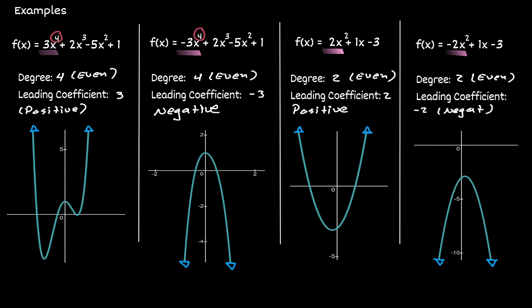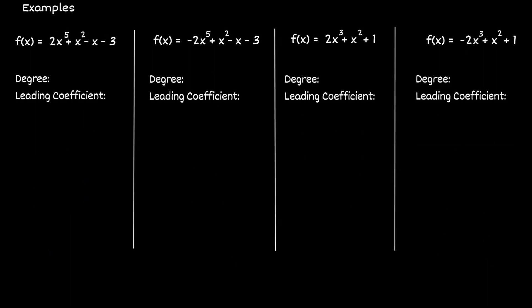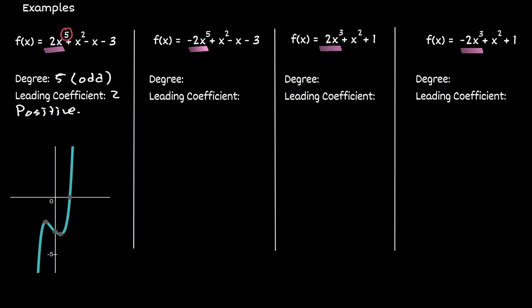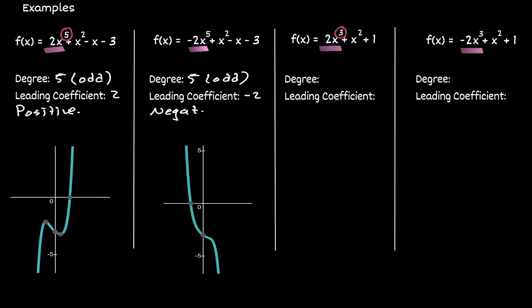Let's take a look at some different examples, analyzing these polynomials the same way as before, concentrating on the leading term for each. In our first polynomial, the degree is five, which is odd, and the leading coefficient is two, which is positive. Now let's graph this function. In the next polynomial, the degree is five, which is odd, and the leading coefficient is negative two, which is negative. Now let's graph this function. Moving to the next polynomial: degree is three, which is odd, and the leading coefficient is two, which is positive. Let's graph this function.